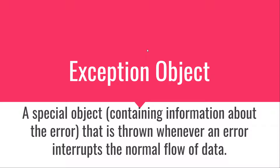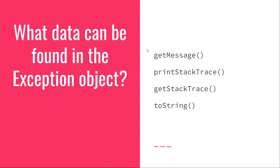This exception object contains very practical information for us developers. We can get the message of that exception, we have access to the stack trace, and we can even print the stack trace to make debugging easier. So you can see that the exception object contains very useful information for developers.